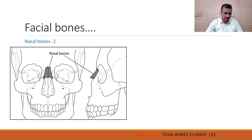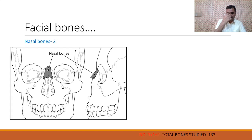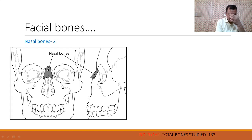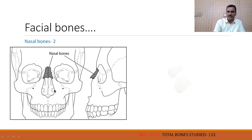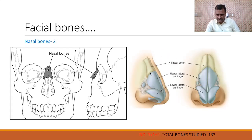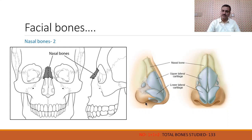First facial bone is the nasal bone. As the name suggests, they form part of the nose. The upper hard part of the nose is formed by nasal bone — two are there, one left and one right. The lower part of the nose is made up of cartilage. So these are two nasal bones and total bones studied till now are 133.